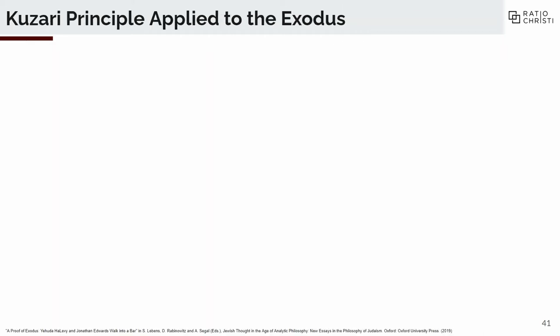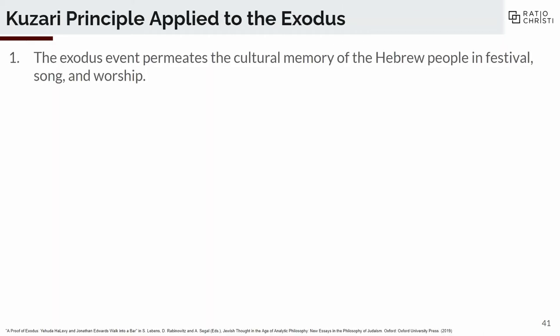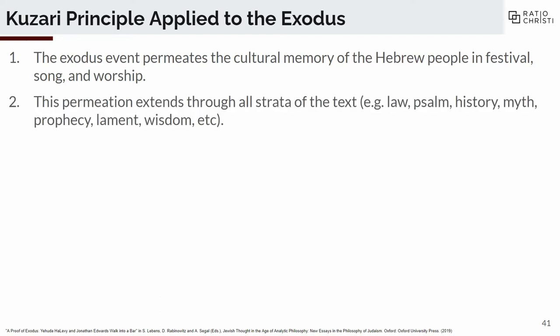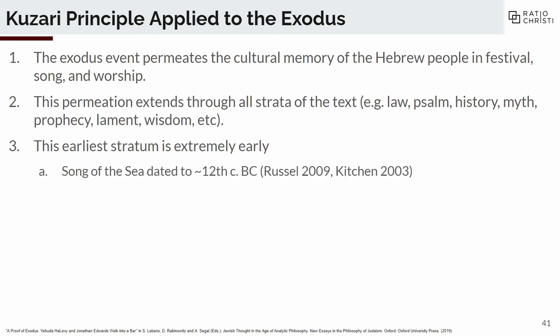Let's go back to Goldschmidt's conditions. The first thing is the Exodus event permeates the cultural memory of the Hebrew people in festival, song, and worship — we've already surveyed that data: the Passover, this Song, the Psalms. But this permeation extends through all strata of the text. We've seen it in law, in the Psalms, in historical books, in mythological accountings, in the prophetic books, in the lament books, and even in the wisdom books. Basically, you cannot escape the Exodus — it's in almost every book of the Old Testament. And the important part: the earliest stratum extends all the way to the 12th century BC, very close to the events if you accept the late date.